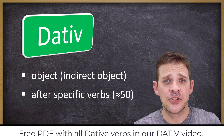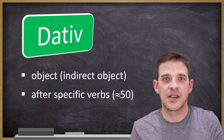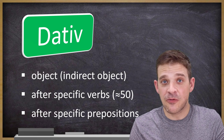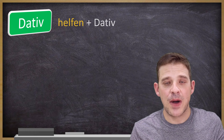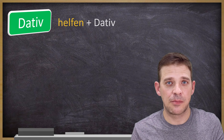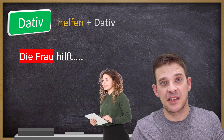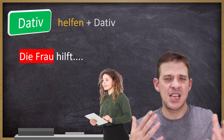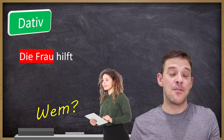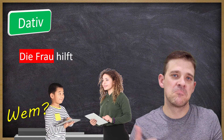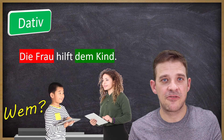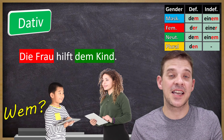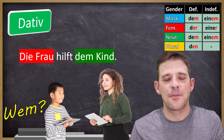So: learn the dative verbs, remember that 'sein' takes nominative, and everything else is accusative — and you're good to go. For example, the verb 'helfen' (to help) is a dative verb. 'Die Frau hilft' — the woman helps — is not complete. You ask 'wem hilft sie?' — whom does she help? — and the answer is 'Sie hilft dem Kind' — she helps the child.